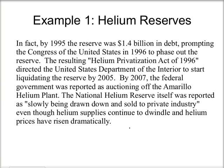By 1995, the reserve was $1.4 billion in debt, which prompted Congress to phase out the reserve in 1996. The resulting Helium Privatization Act of 1996 directed the U.S. Department of the Interior to start liquidating the reserve by 2005. By 2007, the federal government was auctioning off the Amarillo helium plant, and the National Helium Reserve was slowly being drawn down and sold to private industry — even though helium supplies continue to dwindle and prices have risen dramatically. It's a valuable resource, but it was also deeply in debt.